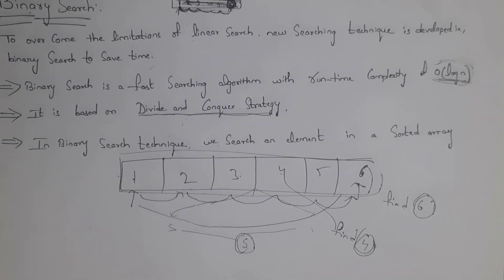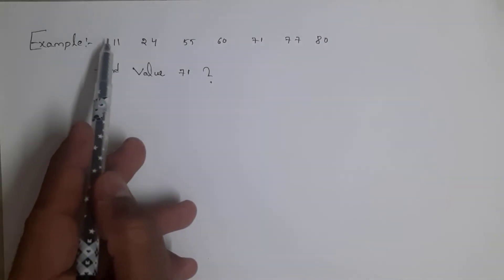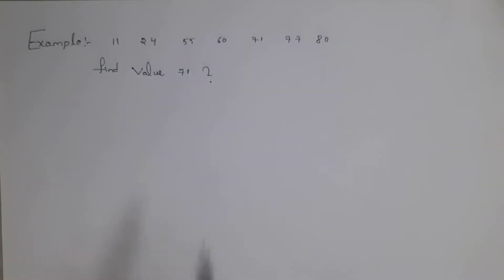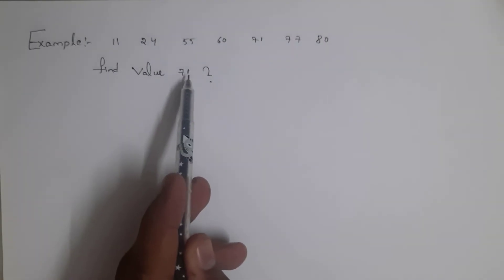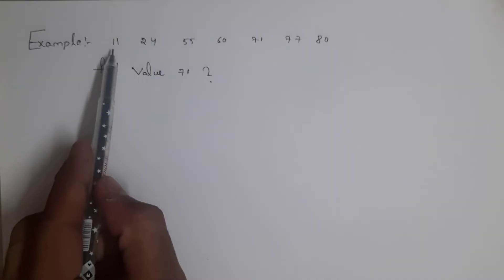I will give one example of how to find an element using binary search so that you can clearly understand. Here they have given a list of a sorted array with total seven elements: 11, 24, 55, 60, 71, 77, and 80. We need to find element 71. Binary search is applicable only for sorted arrays, where elements are arranged from small to big, so we can perform binary search here.